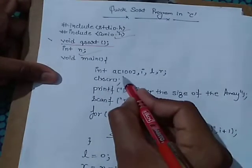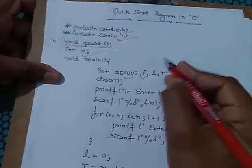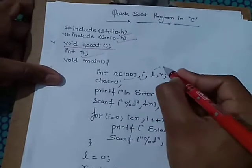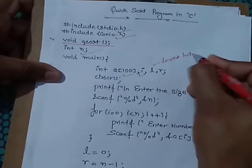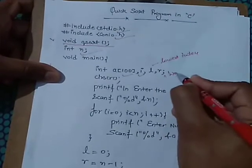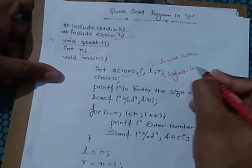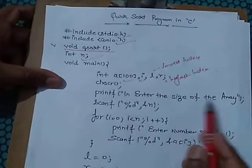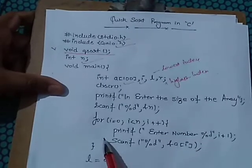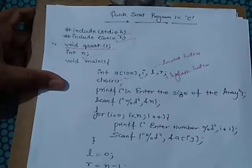In the main function we have declared an array i for loop, l for the lowest index and r for the highest index. Now here we have entered the size of quick sort. Now here we have entered the element of an array.